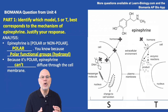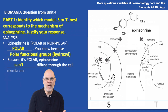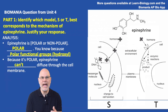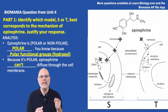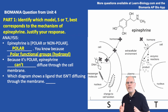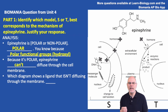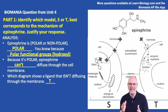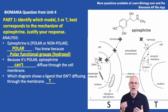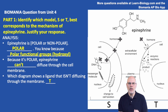The answer is can't. Because it's polar, epinephrine can't diffuse through the cell membrane. That's because of the basic property that like dissolves in like — the membrane of the cell is nonpolar on the inside and it won't allow polar molecules to pass through it. Which diagram is showing a ligand that binds with something else and isn't diffusing through the membrane? It's T. T is showing a molecule that's docking the membrane receptor. So which model best corresponds to the mechanism of epinephrine? It would be model T on the right.